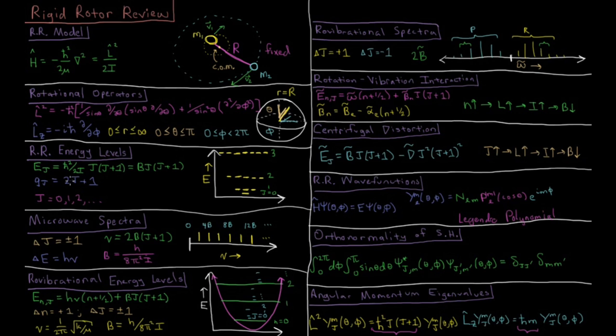We have a degeneracy in this system for every energy level with the quantum number of j, there are 2j plus 1 levels. Going up from j equals 0 we have 1, 3, 5, and 7 energy levels as we go up in j, and the energy levels we can see are quadratically spaced apart.